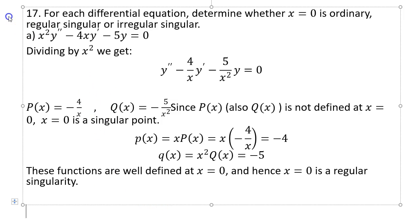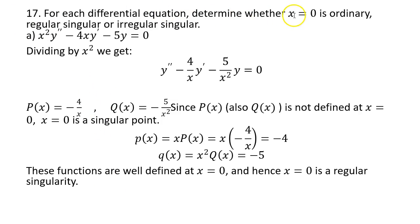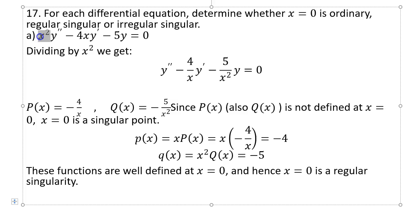Number 17: for each differential equation, determine whether x equal to 0 is an ordinary point, regular singular point, or irregular singular point. If we have a second order differential equation with a vanishing coefficient of y double prime, that's a singular point. For example, if x equals 0 then 0 times y double prime means the y double prime term vanishes.